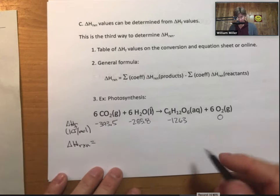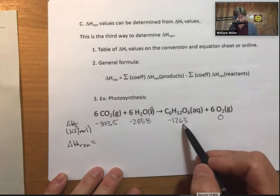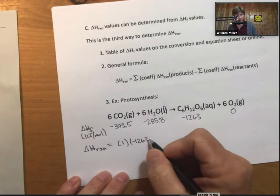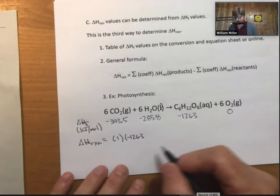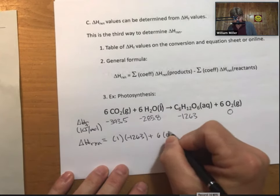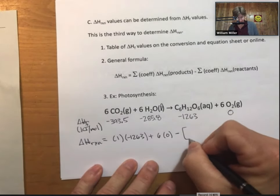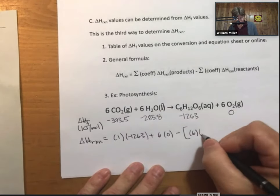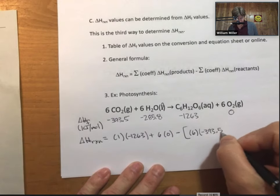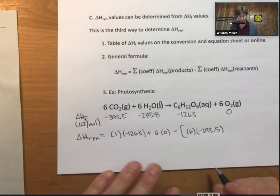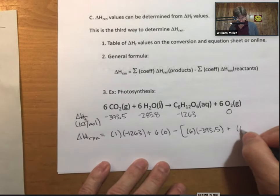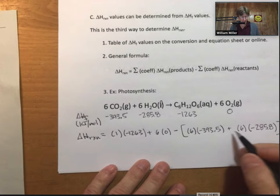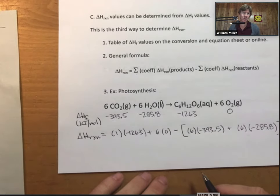Is another application of final state minus initial state. Products will be our final state. So, it's going to be delta H reaction products plus six times their coefficient. So, one, and I'm going to omit units here until the end. Plus six times zero minus, and this time it's going to be minus the quantity for all the reactants. So, six times negative 393.5, that's for my carbon dioxide.